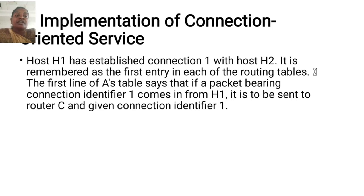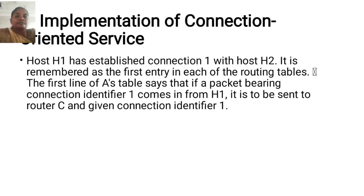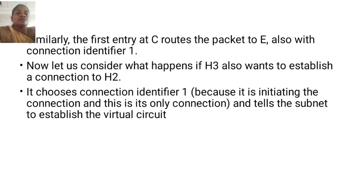Implementation of connection-oriented service: Host H1 has established connection 1 with host H2, remembered as the first entry in each of the routing tables. The first line of A's table says that if a packet bearing connection identifier 1 comes in from H1, it is to be sent to router C and given connection identifier 1. Similarly, the first entry at C routes the packet to E, also with connection identifier 1. Now, consider what happens if H3 also wants to establish a connection to H2. It chooses connection identifier 1 because it is initiating the connection and this is its only connection, and tells the subnet to establish the virtual circuit.